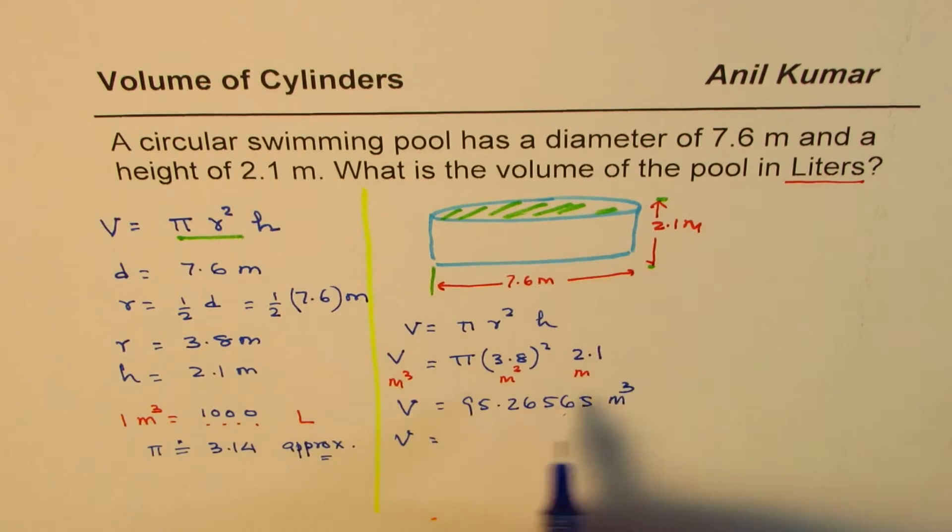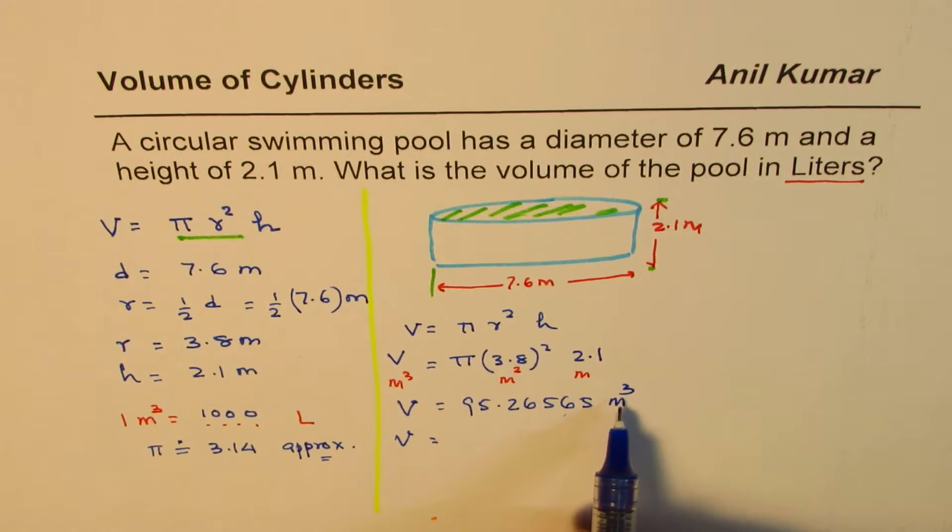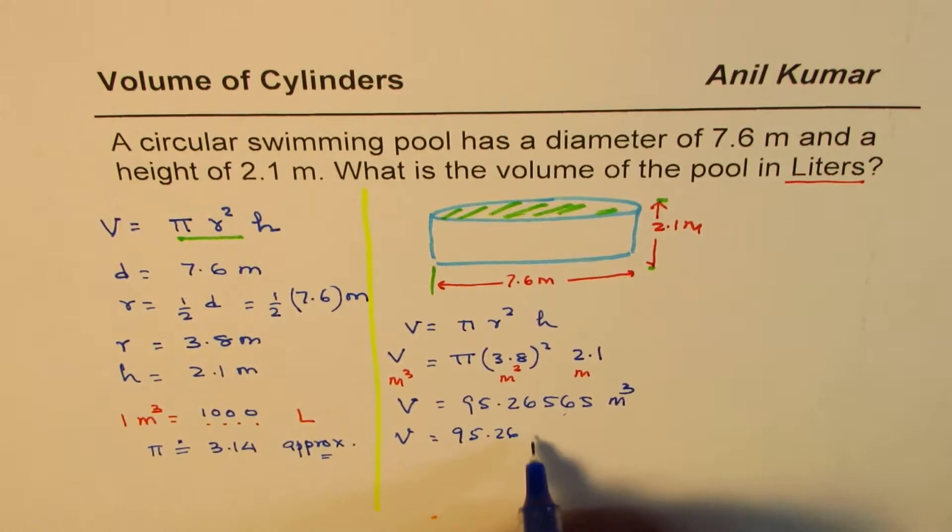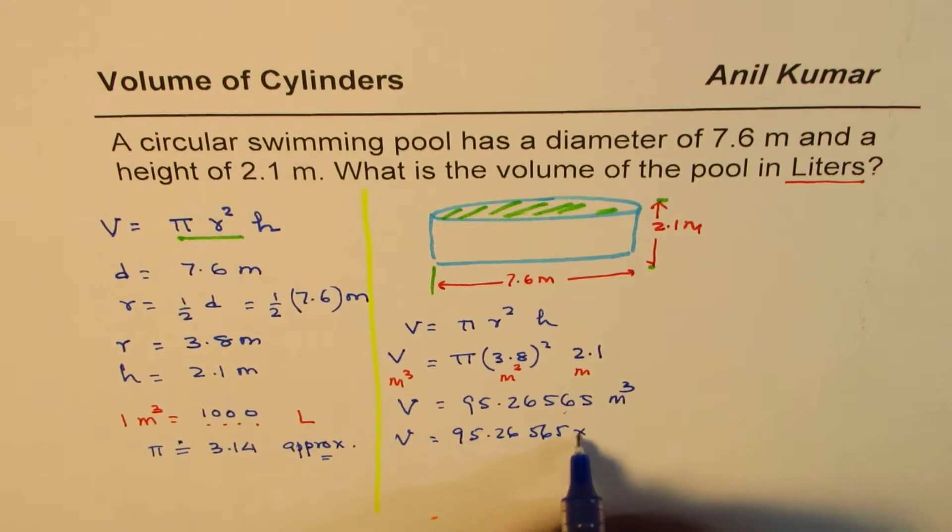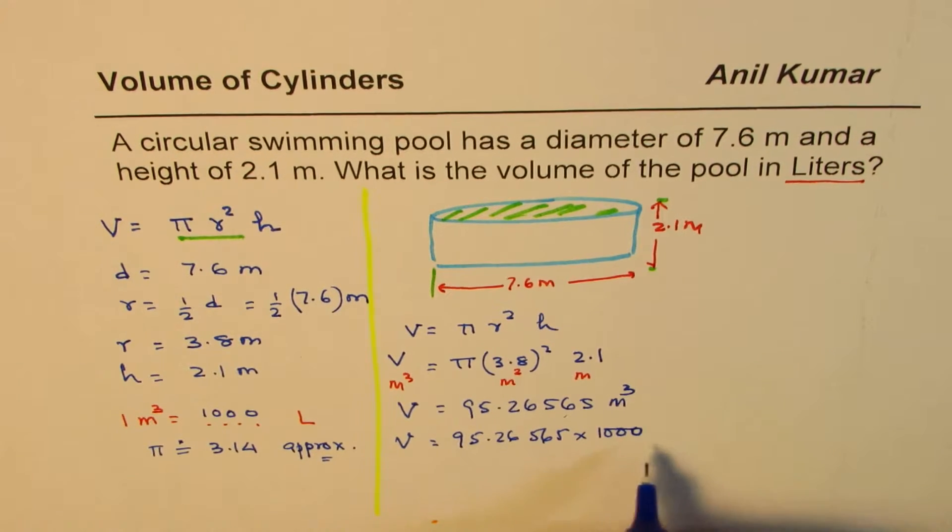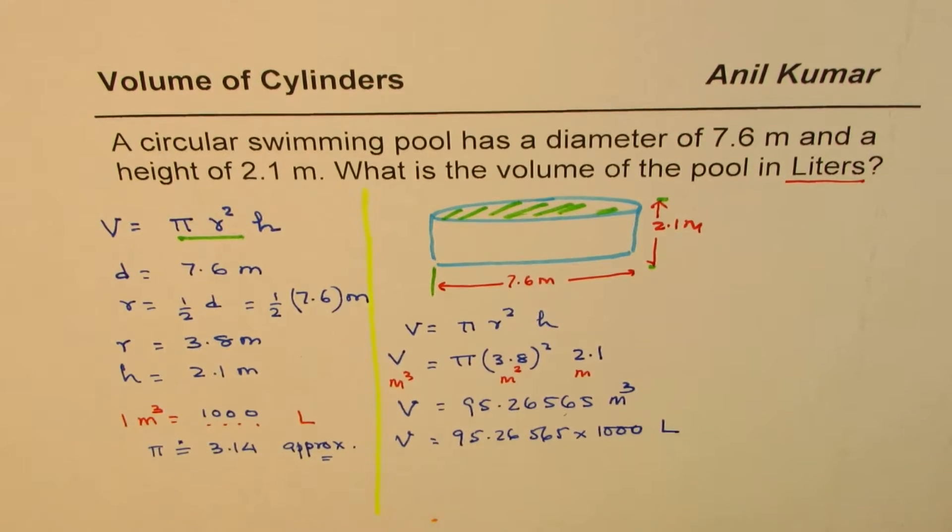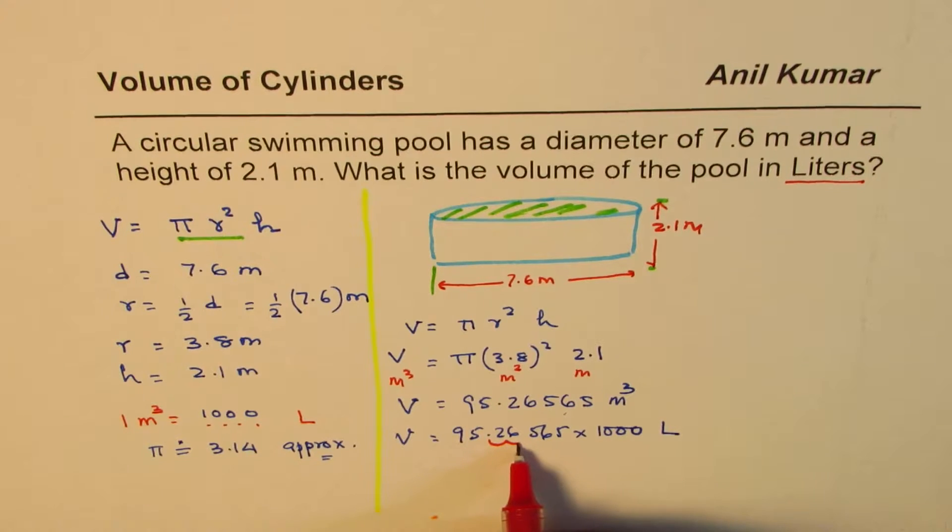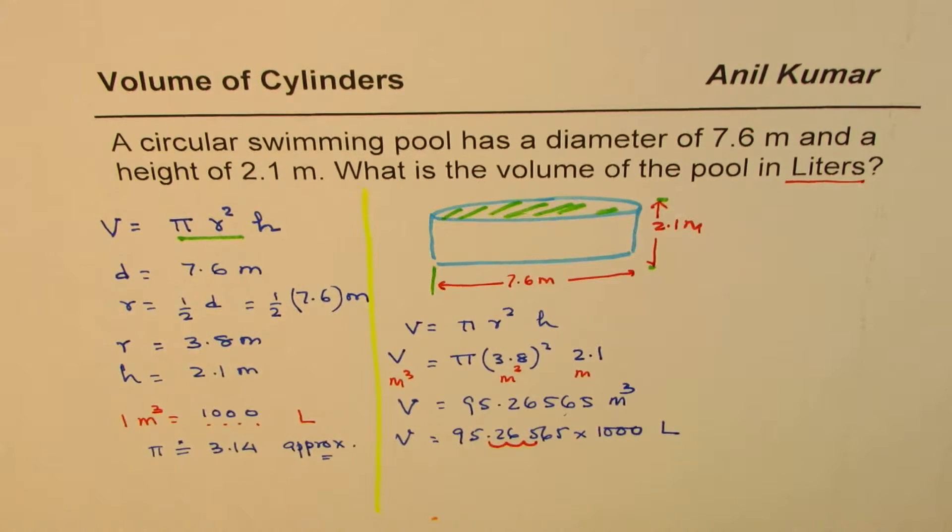So that is my volume of this circular swimming pool in meter cube. How do I convert that to liters? I need to multiply this by 1,000. So I get 95.26565 times 1,000. So we just multiply by 1,000 to get this particular unit in liters.